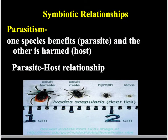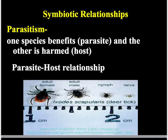Parasitism is what happens when one species benefits — that species is called the parasite — and the other one is harmed. The one that's harmed is called the host, and normally the parasite lives on or inside the host. For example, deer ticks live on deer, bite into them, and suck their blood. The tick benefits by getting food, while the deer is harmed by losing blood and can become very sick or even die.